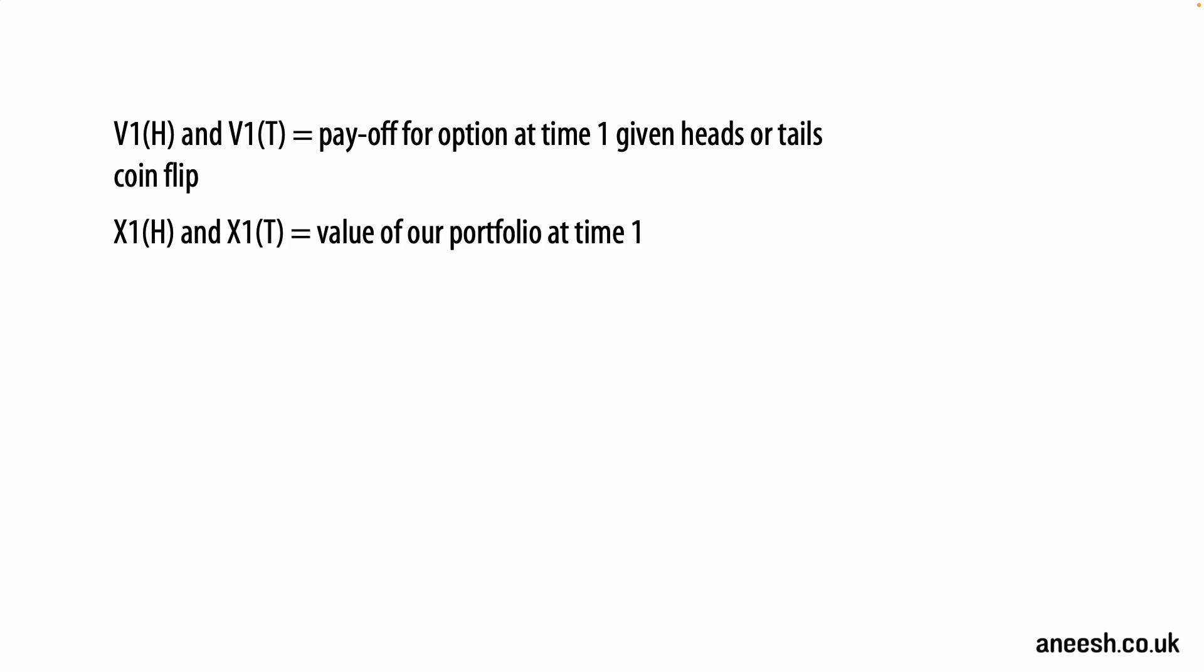Be sure not to confuse V1(H) with X1(H) and vice versa for tails, as X1(H) and X1(T) represent the value of our portfolio which accounts for the position held with the stock and money market. Now we want these two values to be equal if we efficiently price our option and hold the correct delta in a stock to hedge our exposure. We want to solve for a fair price of the option, which is denoted as X0.